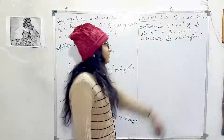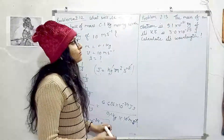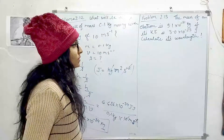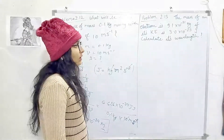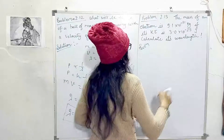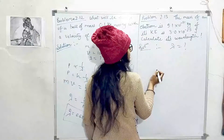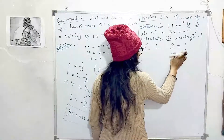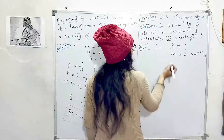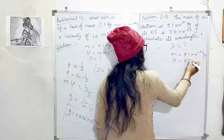Problem 2.13: For an electron, the mass is known. If its kinetic energy is 3 × 10⁻²⁵ joule, we need to find the wavelength. The mass of the electron is given as 9.1 × 10⁻³¹ kg. However, velocity is not directly given — instead, kinetic energy is given.